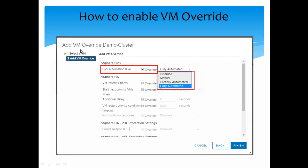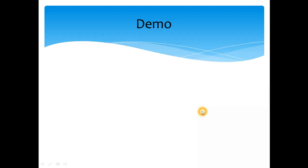To set VM override options, go to Edit Settings and find the VM Override menu. Select Add a VM and a wizard starts. Once you select the VM, you get the DRS automation level override with four options: Disabled, Manual, Partially Automated, and Fully Automated. You can completely disable DRS for that VM or set it to manual, then click Finish.